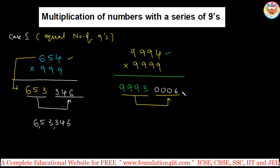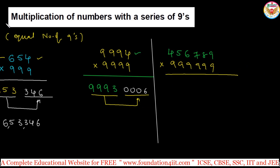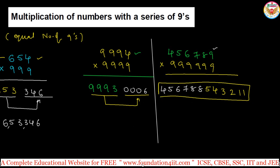You can write the answer easily for any huge number when the number of 9s is the same. For example, take a 6-digit number like 456789. Multiply by six 9s — they would normally take five to ten minutes to calculate this. But using this technique, subtract 1 to get 456788, then subtract each digit from 9: 9 minus 4 is 5, then 3, 7, 2, 1, 1. So the answer is 456788 543211.